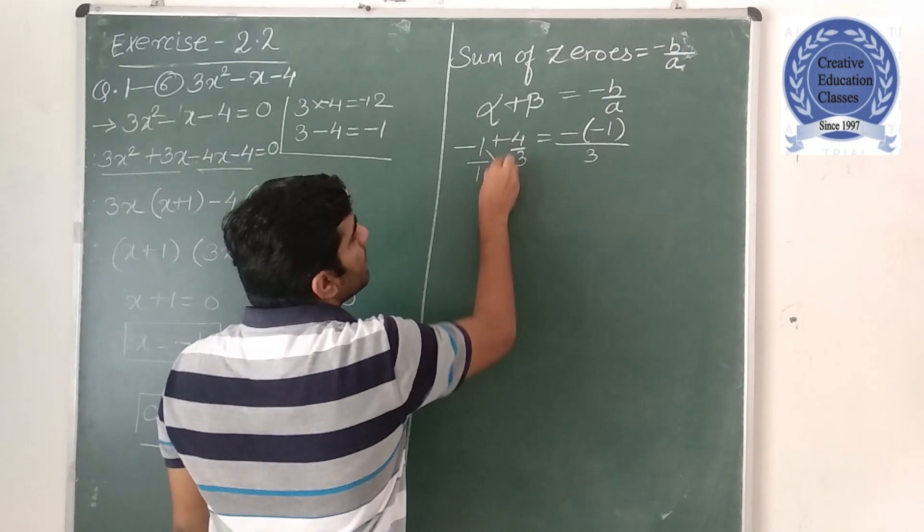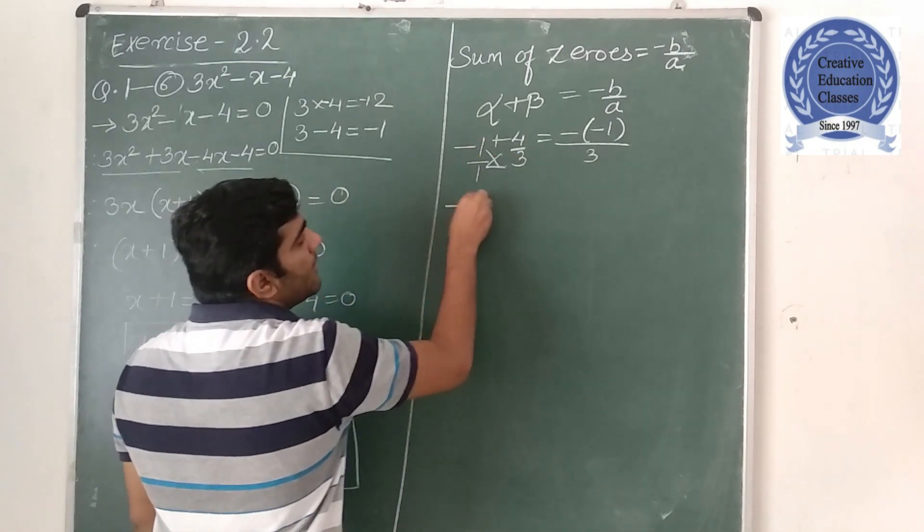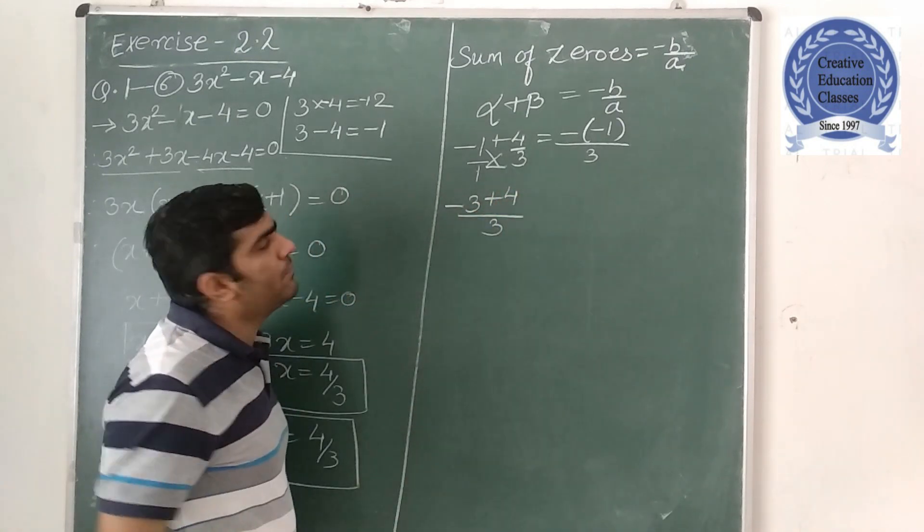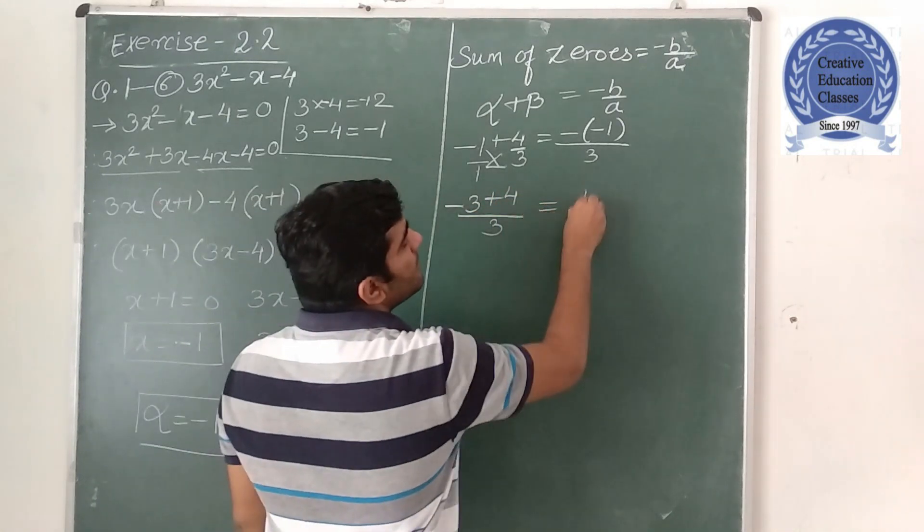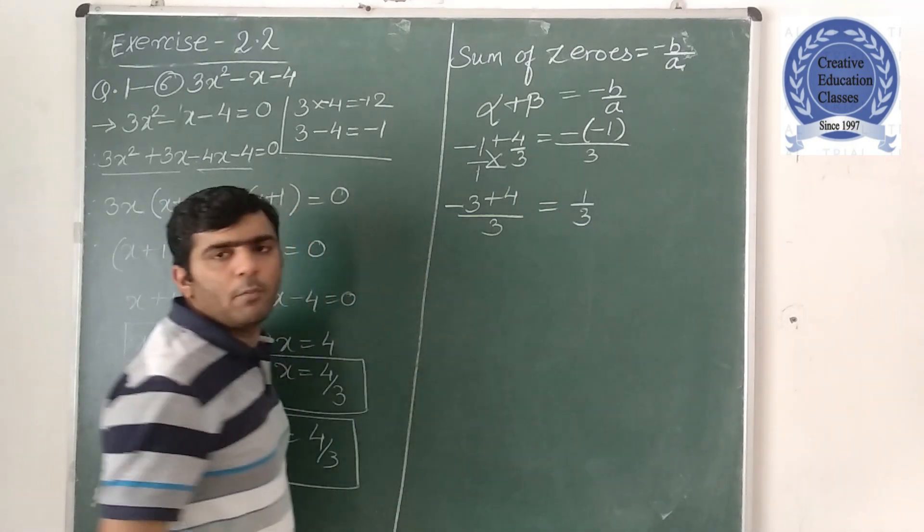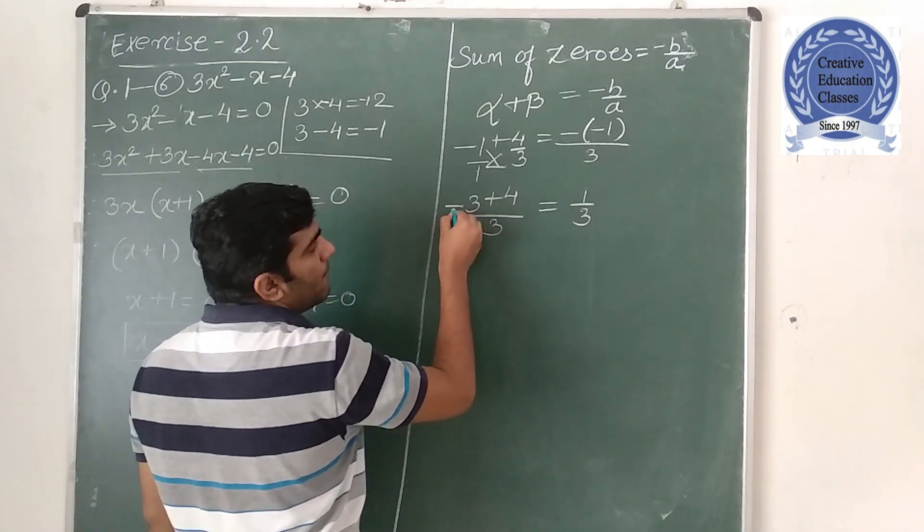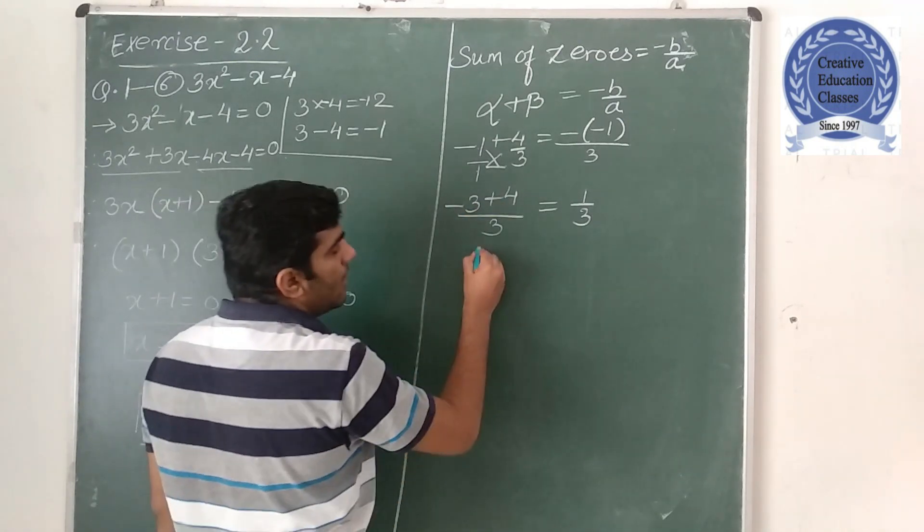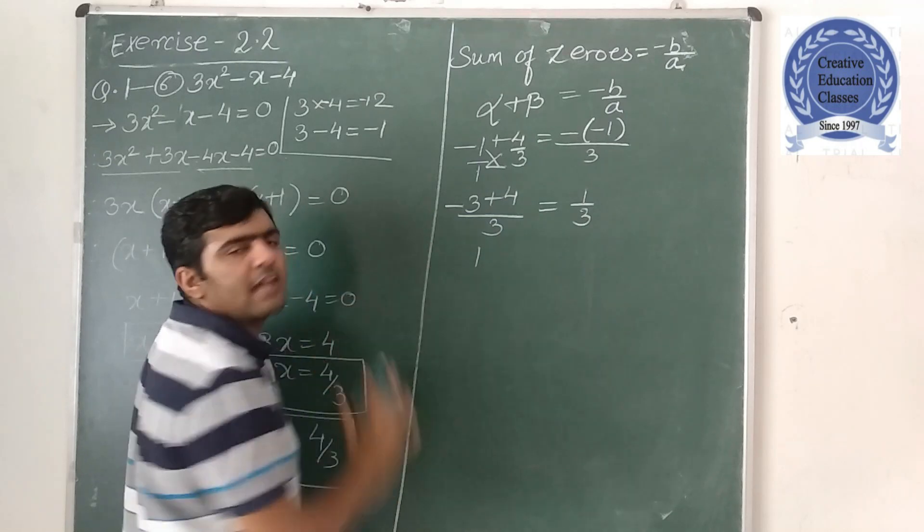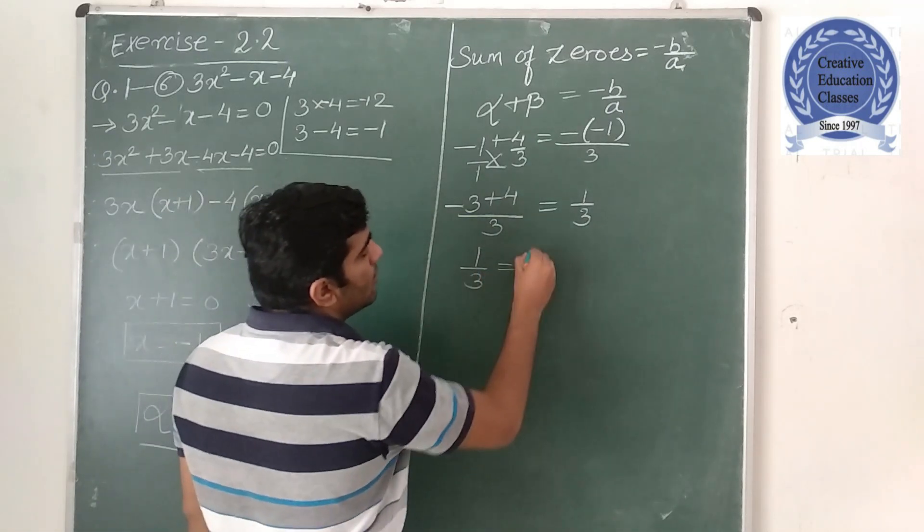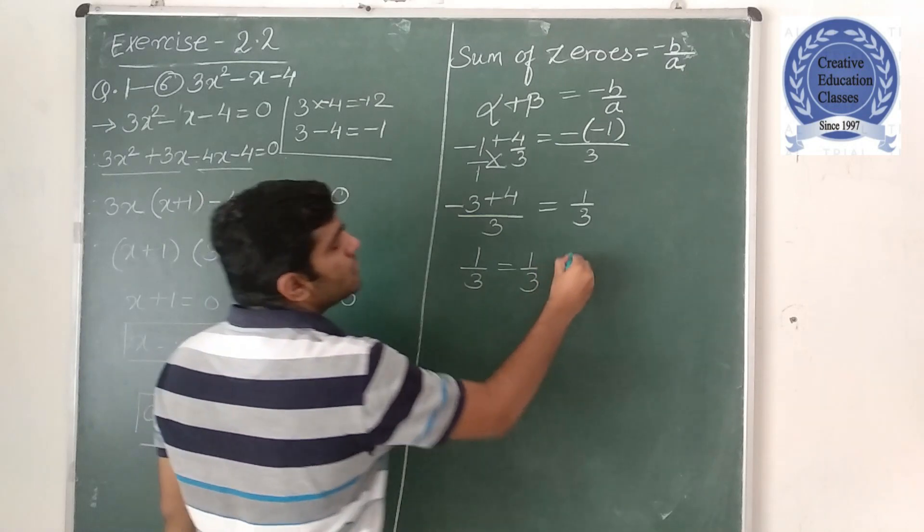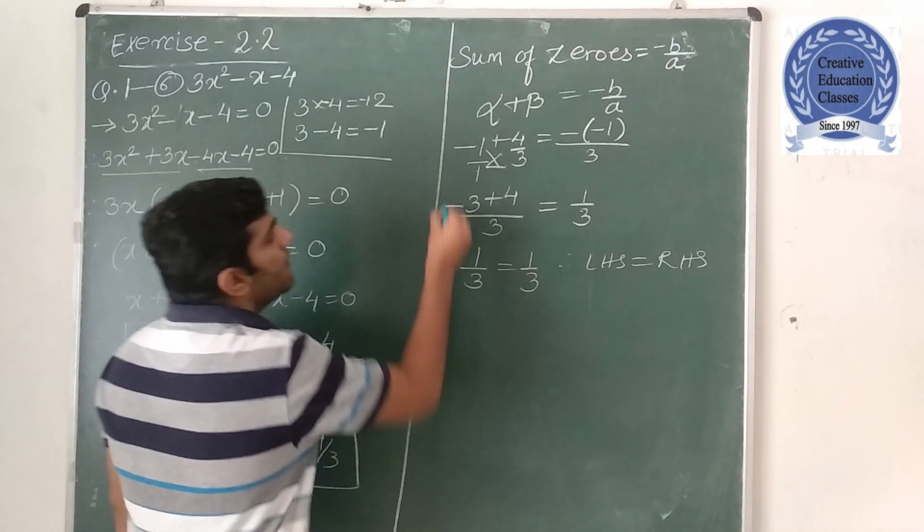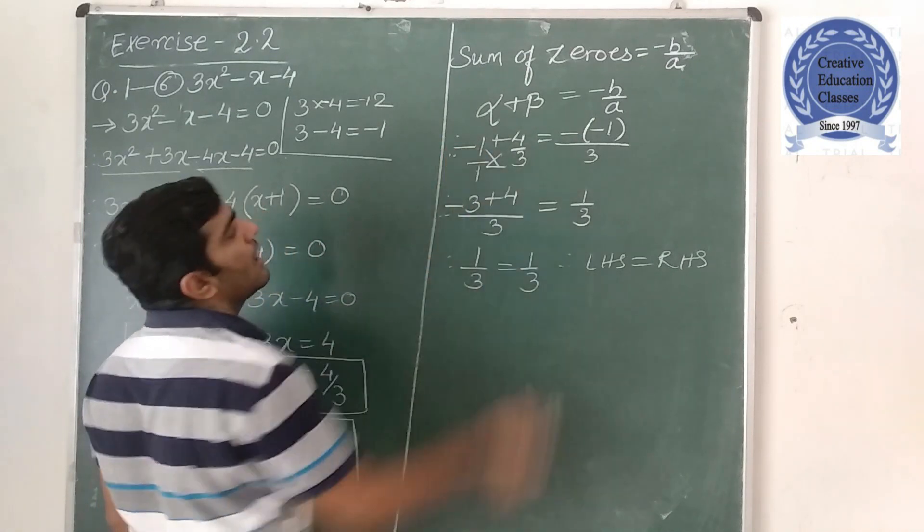And the same, 3 ones are 3, minus 3, 1 upon 3 plus 4. Minus 1 plus 4 upon 3. 4 minus 3 what will be? Minus plus what will be? Minus. So what will be? 1, greater number sign, upon 3 is equal to 1 upon 3. In short, therefore, we have verified LHS is equal to RHS.